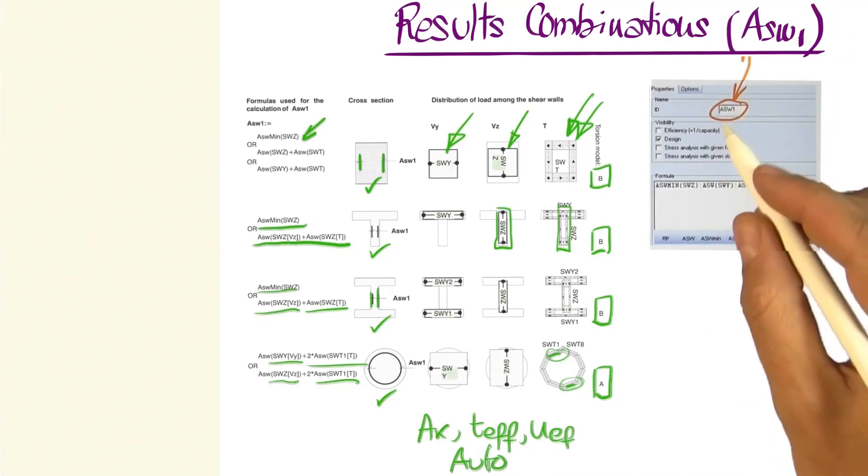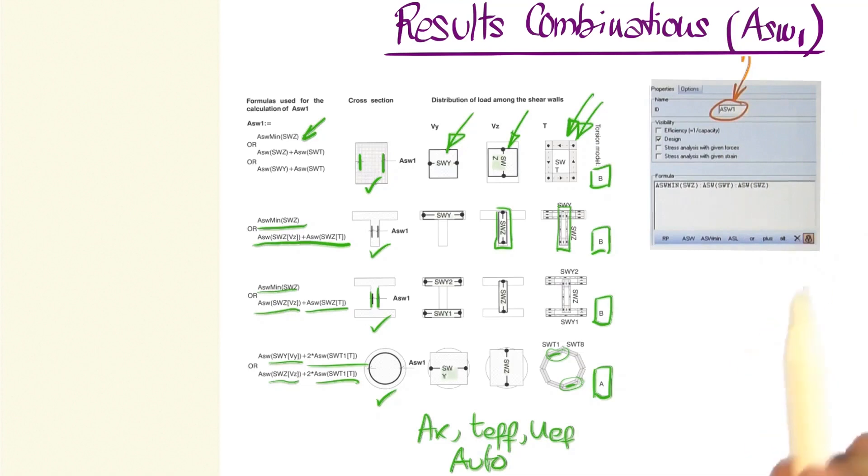In this case, we'll see that the parameterized cross section will always have an ASW1 for the design of the reinforcements, and here is where the formula will appear. This formula can be typed in manually, or by using the lower buttons for its creation.